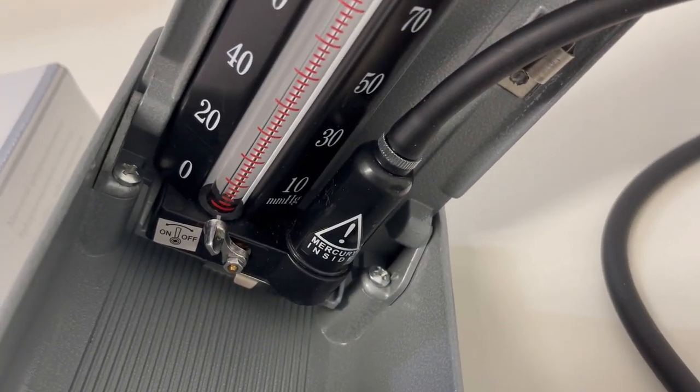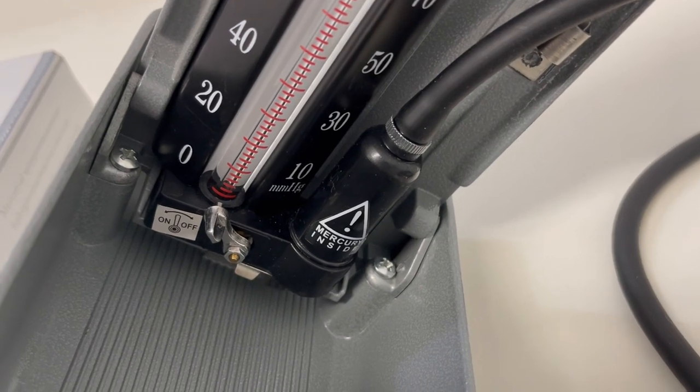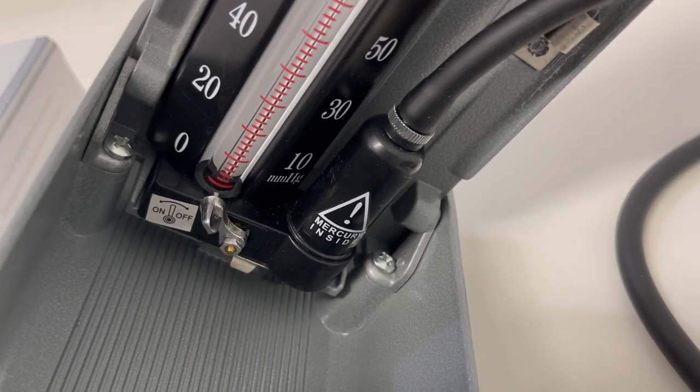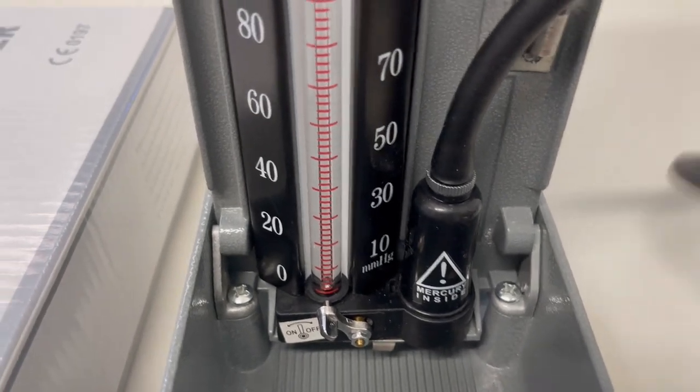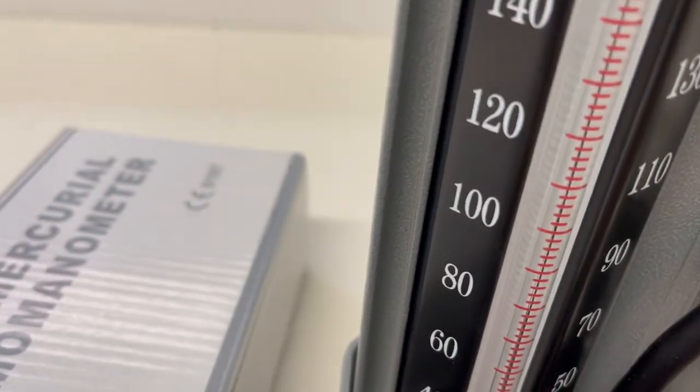You're allowing the mercury and any air bubbles to fall into the bulb at the bottom. When you bring it back you should be right, the mercury will just pop up at the zero again at the bottom there.